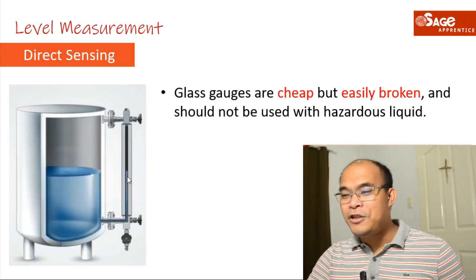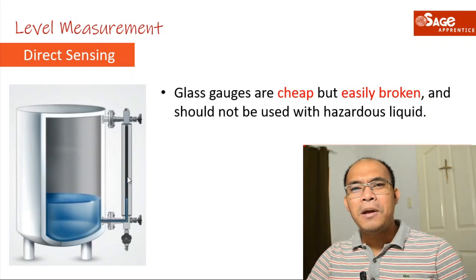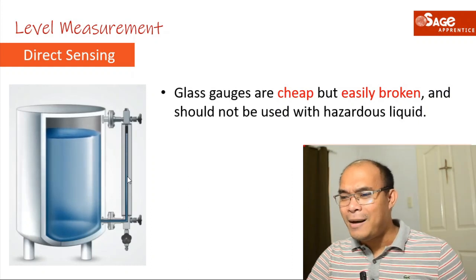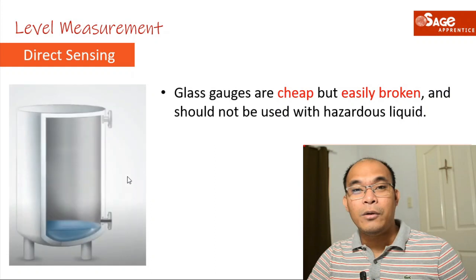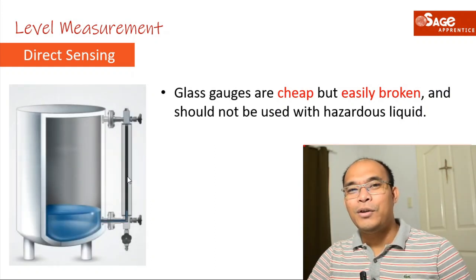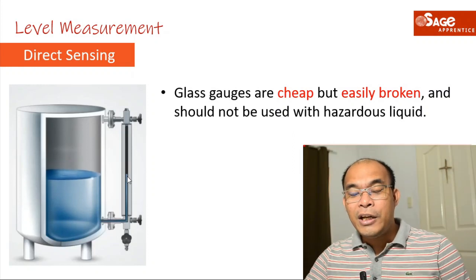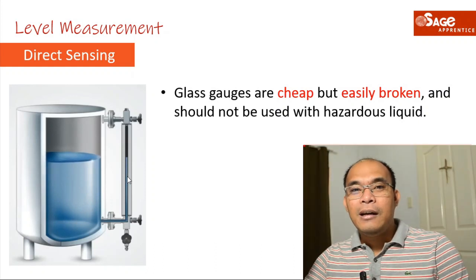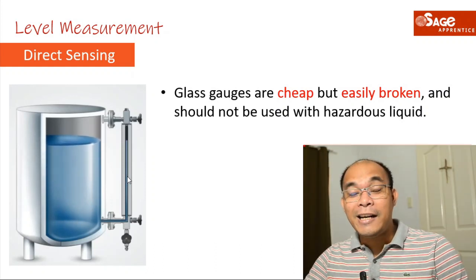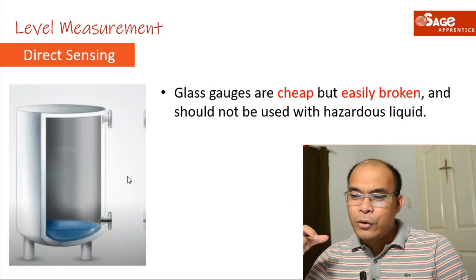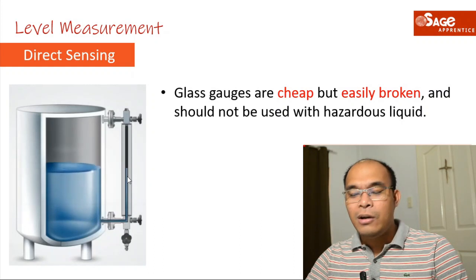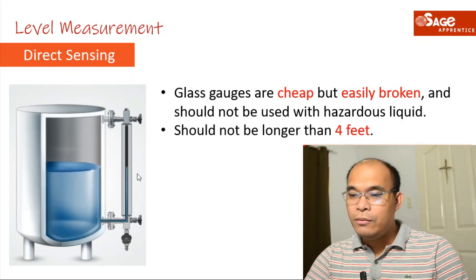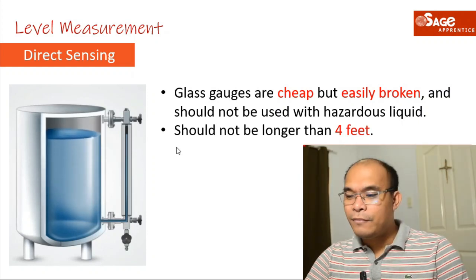The common characteristics of a sight glass: glass gauges are cheap but easily broken since glass is a fragile material. They should not be used with hazardous liquids — if the glass breaks and the tank contains hazardous material, it puts engineers at very high risk. The sight glass should not be longer than four feet.